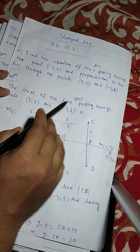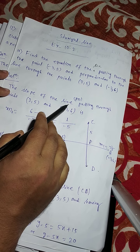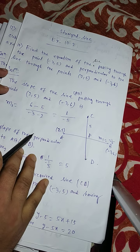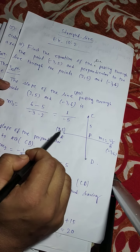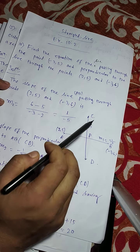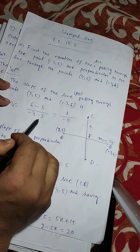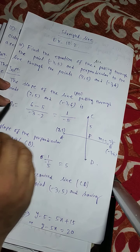The slope of the line AB passing through the points (2, 5) and (-3, 6) is M1 equals Y2 minus Y1 by X2 minus X1. So 6 minus 5 by minus 3 minus 2, that means 1 by minus 5.